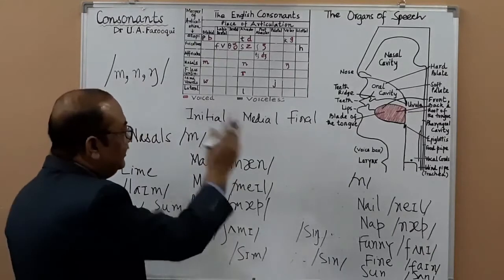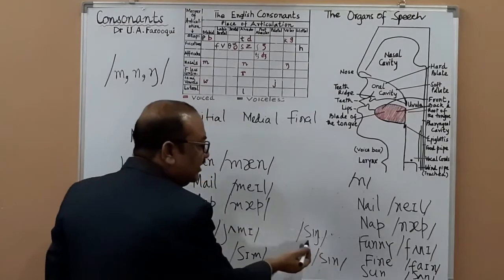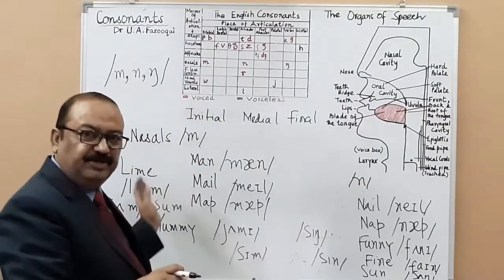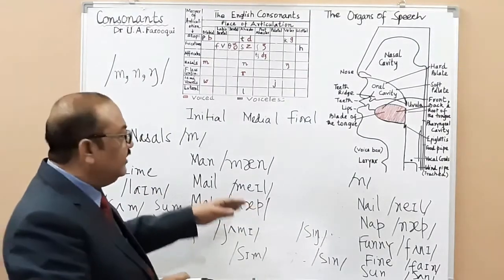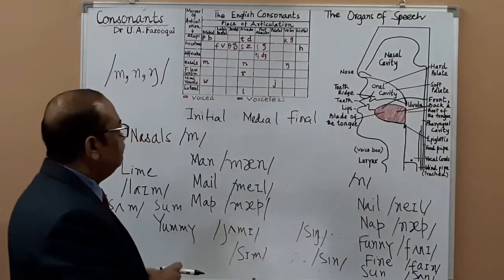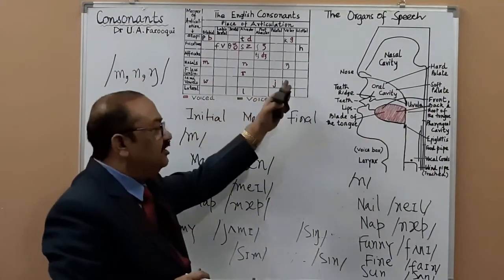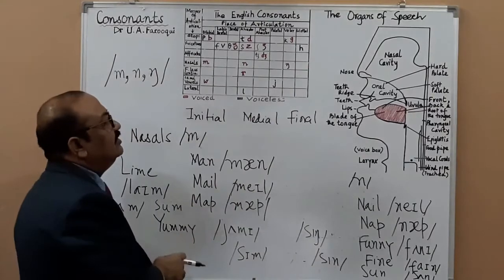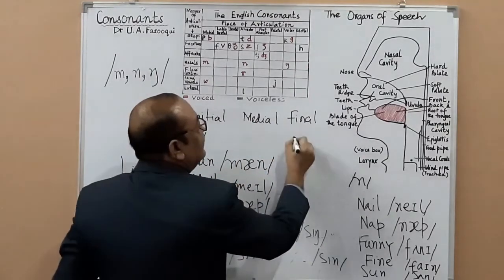Now 'sing' — this is the final occurrence of /ŋ/. The /ŋ/ sound obviously doesn't occur initially — you cannot have a word beginning with the /ŋ/ sound. So for initial, you write NIL.